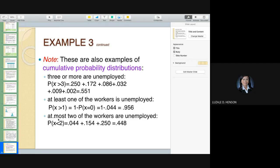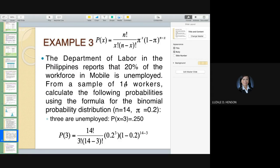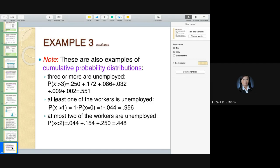Then lastly, at most two of the workers are unemployed. At most means maximum—up to two. So you compute zero, compute the probability that x equals 1, compute the probability that x equals 2, then get the sum. That's why it's called cumulative probability distributions. You have 44.8% likelihood that from this problem, from 14 workers, the likelihood that at most two are unemployed is 44.8%.